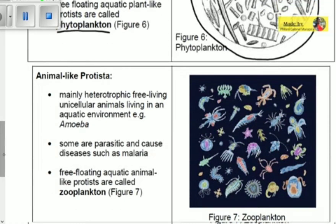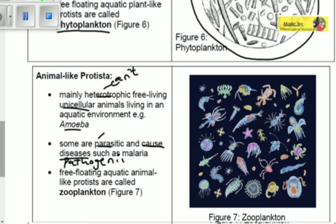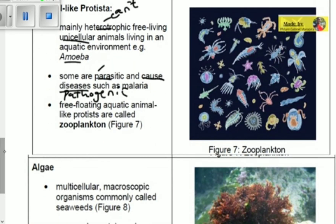The second group is animal-like Protists, which are mainly heterotrophic, free-living unicellular organisms living in aquatic environments. An example is the amoeba. Unlike plant-like Protists, animal-like Protists cannot produce their own food. They have only one cell and live in water, not on land. Some are parasitic — benefiting from another organism while harming it — and some are pathogenic, meaning they can cause diseases such as malaria.